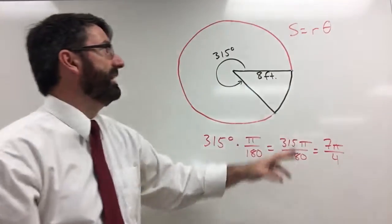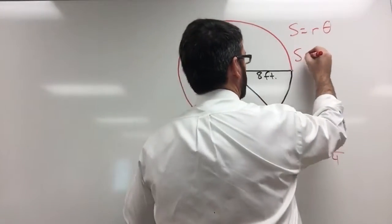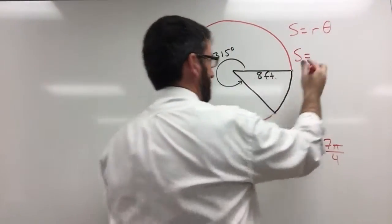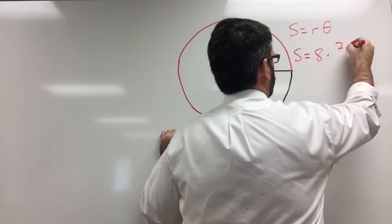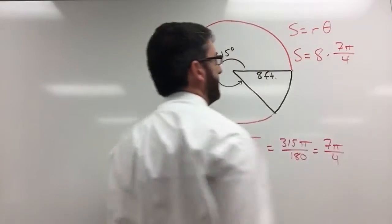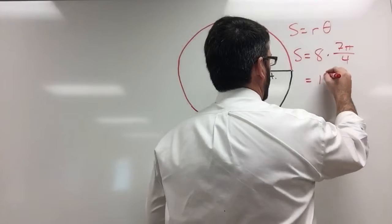Alright, so now we've got it in radians, now this is an easy calculation. The arc length is just going to be equal to 8 feet, that's the radius, times 7 pi divided by 4, which is going to be equal to 14 pi.